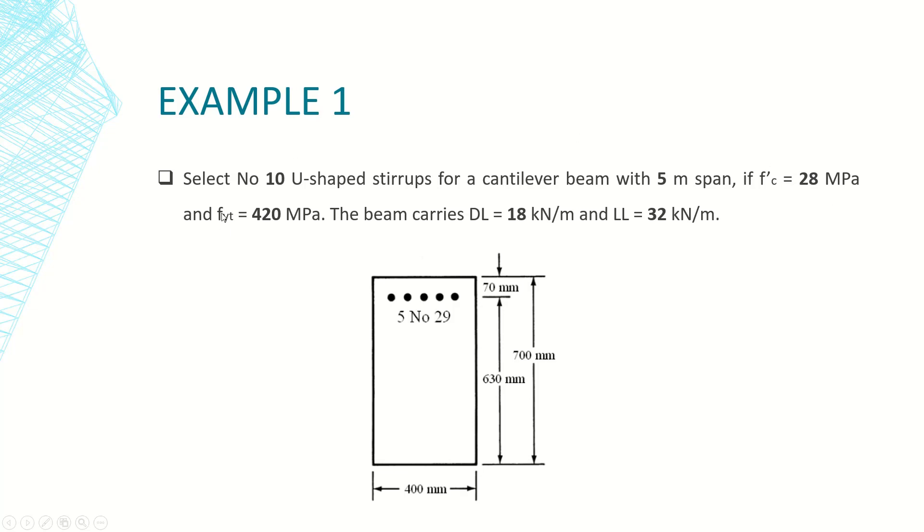And tensile strength of 420 MPa for shear reinforcement that will be used. We are going to design this beam to resist shear by U-shaped stirrups, number 10, 10 millimeters diameter. The beam is subjected to a dead load total of 18 kN/m and live load of 32 kN/m.